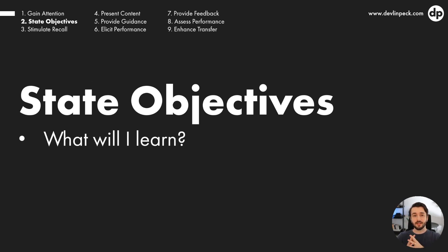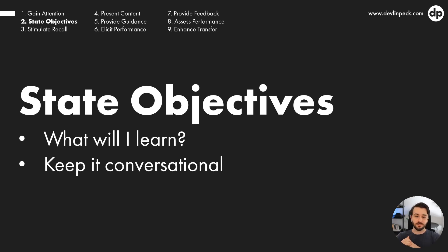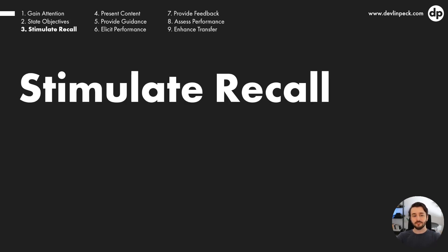You want to answer the question: what are people going to learn in this experience, and what will they accomplish by the end? The biggest mistake people make here is presenting very dry Bloom's taxonomy learning objectives. Those are for you to guide your design decisions — you don't need to present them to your audience. When stating objectives, keep it conversational: 'Today you'll learn about this,' or 'By the end of this, you'll know how to do this.' Keep it simple and let them know where you're going.